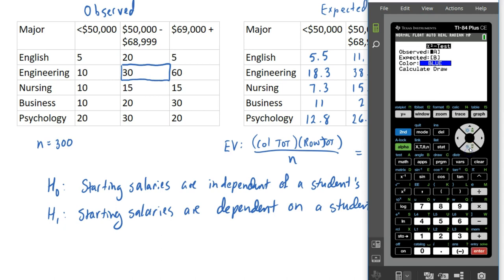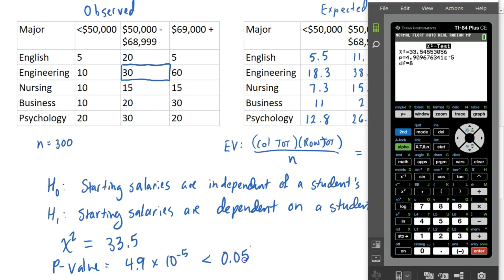I'm going to go down to calculate, and see what it gives me. It gives me the chi-square statistic of 33.5. And it gives me a p-value of 4.9 times 10 to the minus fifth power. So we have a very small p-value that's definitely less than alpha. Alpha was .05 in this case. And since my p-value is smaller, we are going to reject the null. And our null hypothesis is that starting salary and college major are independent. So we have found significant evidence to reject that idea.